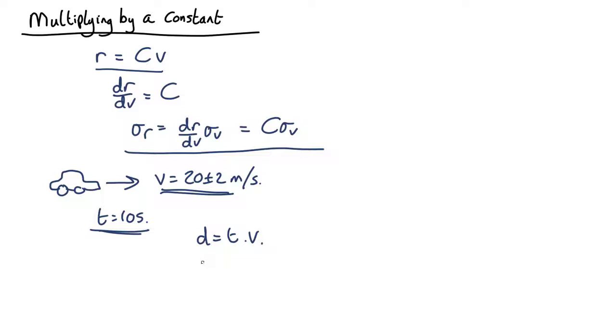So if we want to work out the uncertainty in the distance, it's just going to be the constant times the uncertainty in the velocity, which in this case is 2. So the uncertainty in the distance is going to be 10 times 2, equals 20.